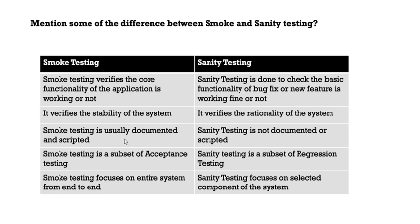We will also have automation for smoke testing. Whenever we get a new build, we run the automation to check whether the important features of the application are working fine. Smoke testing is a subset of acceptance testing, whereas sanity testing is a subset of regression testing. Smoke testing focuses on the entire system end to end, whereas sanity testing focuses on a selected component of the system.